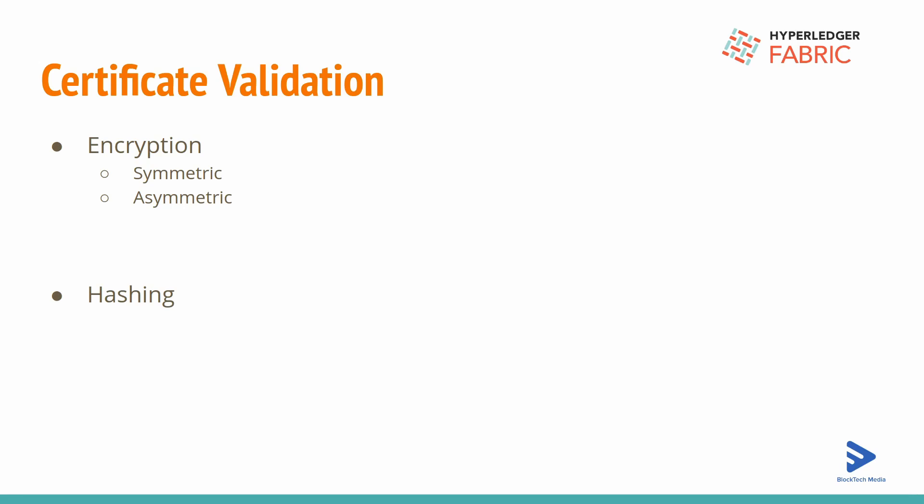One of the most important things in Hyperledger Fabric is certificate validation — though it's actually a general concept, not Fabric-specific. Before discussing certificate validation, we should be aware of encryption and hashing. Encryption is the process of converting plain text into cipher text, and decryption is converting cipher text back into plain text. In symmetric encryption, we encrypt and decrypt using the same key. In asymmetric encryption, the user has two keys — a public key and a private key — and can encrypt with one key and decrypt with the other.